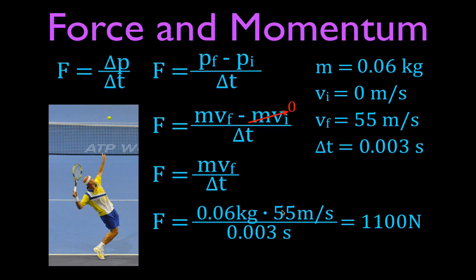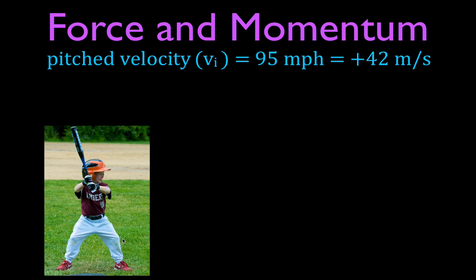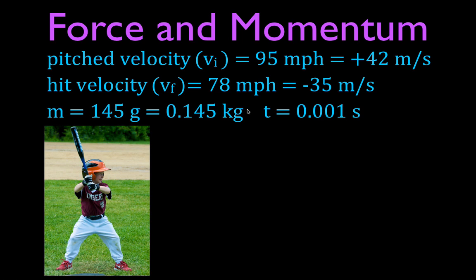Now we'll apply the same approach to a batter hitting a 95-mile-per-hour fastball. A 95-mile-per-hour fastball travels at about 42 meters per second. I chose the direction toward the player as positive. When the batter hits the ball, it travels at 78 miles per hour in the opposite direction — that's minus 35 meters per second. The baseball has a mass of 145 grams, or 0.145 kilograms — the mass of a Major League regulation baseball. The contact time I chose is one one-thousandth of a second, 0.001 seconds.